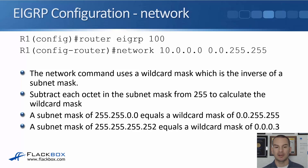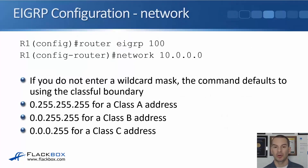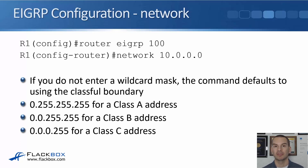For example, a subnet mask of 255.255.0.0 equals a wildcard mask of 0.0.255.255 — the inverse. A subnet mask of 255.255.255.252 equals a wildcard mask of 0.0.0.3, because 255 minus 252 is 3. If you don't enter a wildcard mask — for example, 'network 10.0.0.0' without one — the command defaults to the classful boundary: 0.255.255.255 for class A, 0.0.255.255 for class B, and 0.0.0.255 for class C.